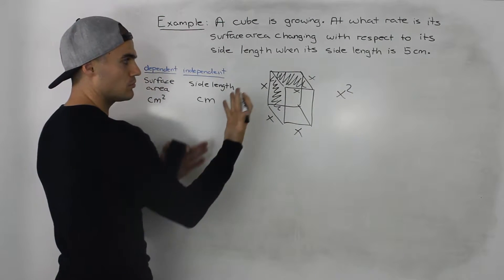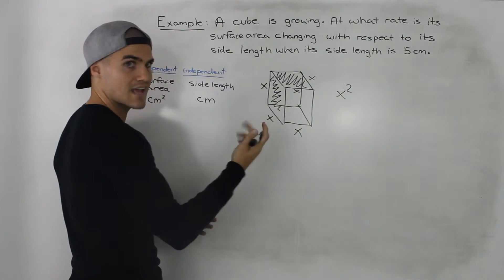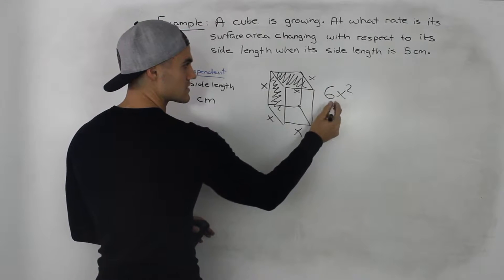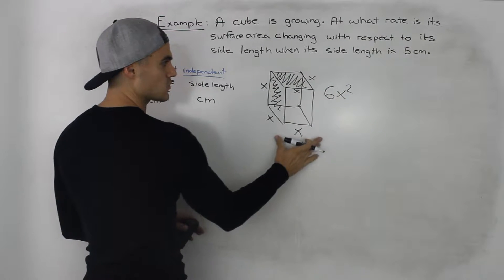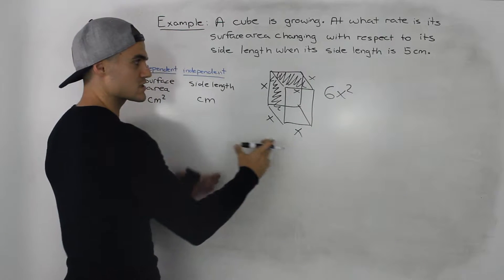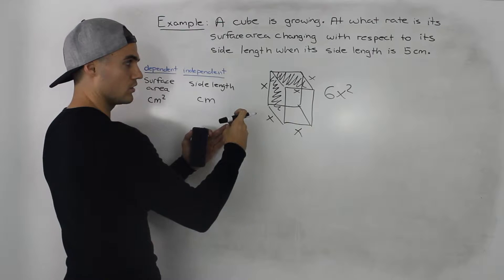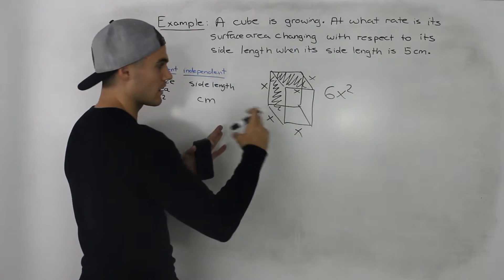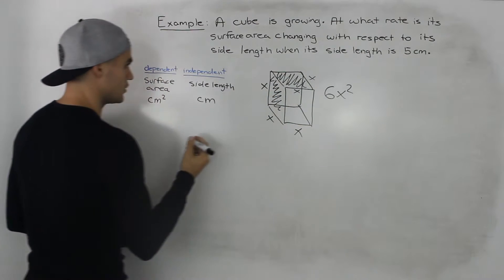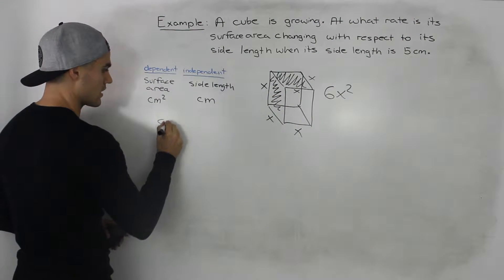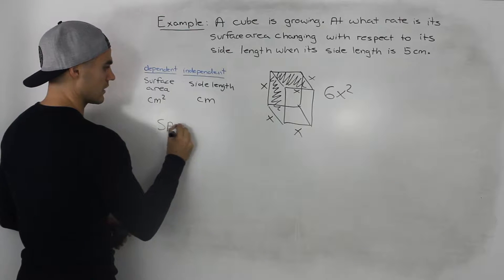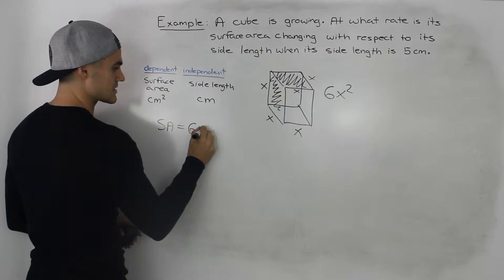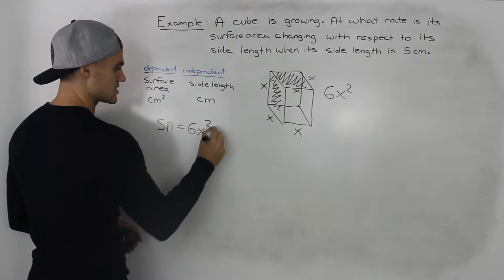On a cube there are six sides, so there are six of these faces. So 6x squared gives us the total surface area of the cube. The surface area is equal to 6x squared. We label x as the side length.